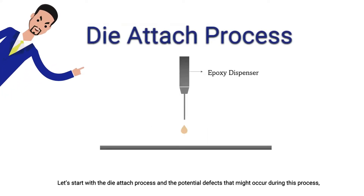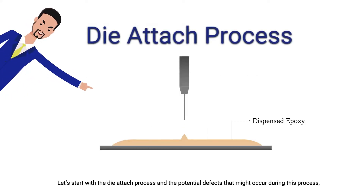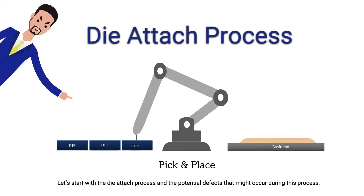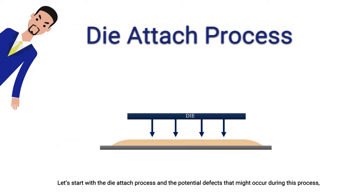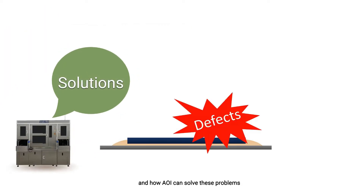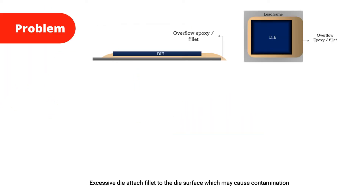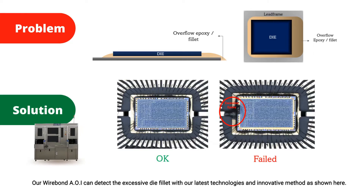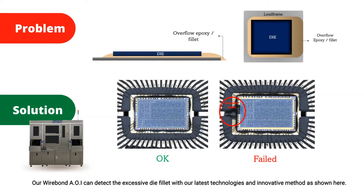Let's start with the die attach process and the potential defects that might occur during this process, and how AOI can solve these problems. Excessive die attach fillet to the die surface may cause contamination. Our wire bond AOI can detect the excessive die fillet with our latest technologies and innovative method, as shown here.